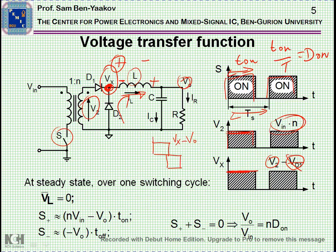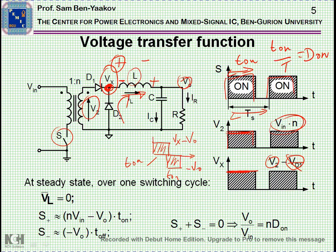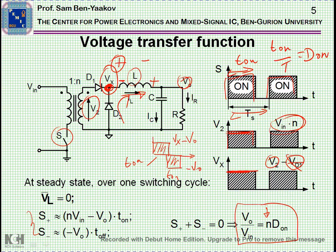As we know, the average voltage on an inductor during a period must be zero, because otherwise the average current will drift either positively or negatively. So this area during the time T_on must equal this area during T_off, which is minus Vout. Equating these two areas, we find that the transfer ratio of the forward converter is N times D_on. This is very similar to the buck converter, except for the N, which is an extra transfer ratio caused by the transformer turns ratio.